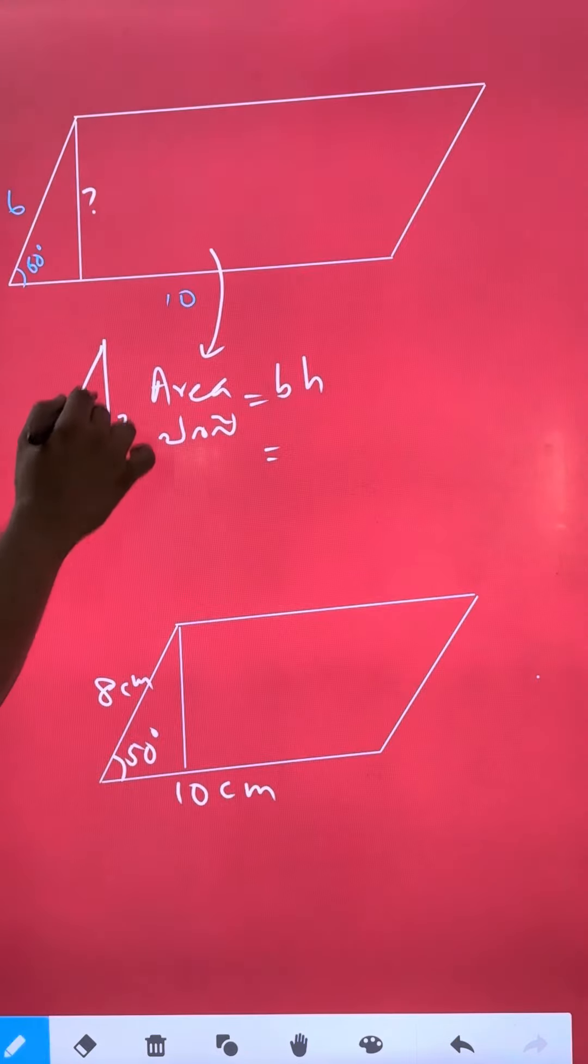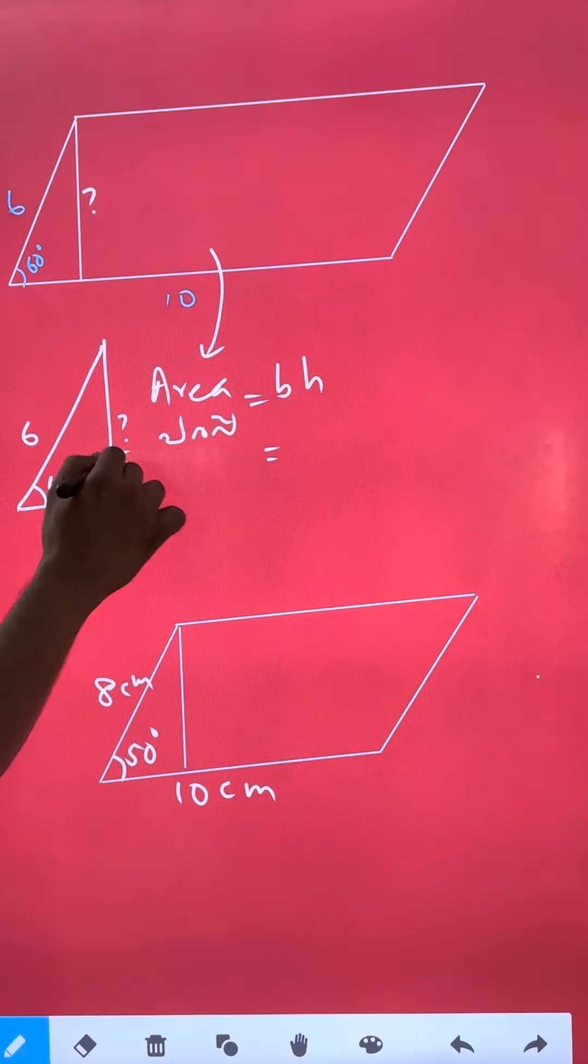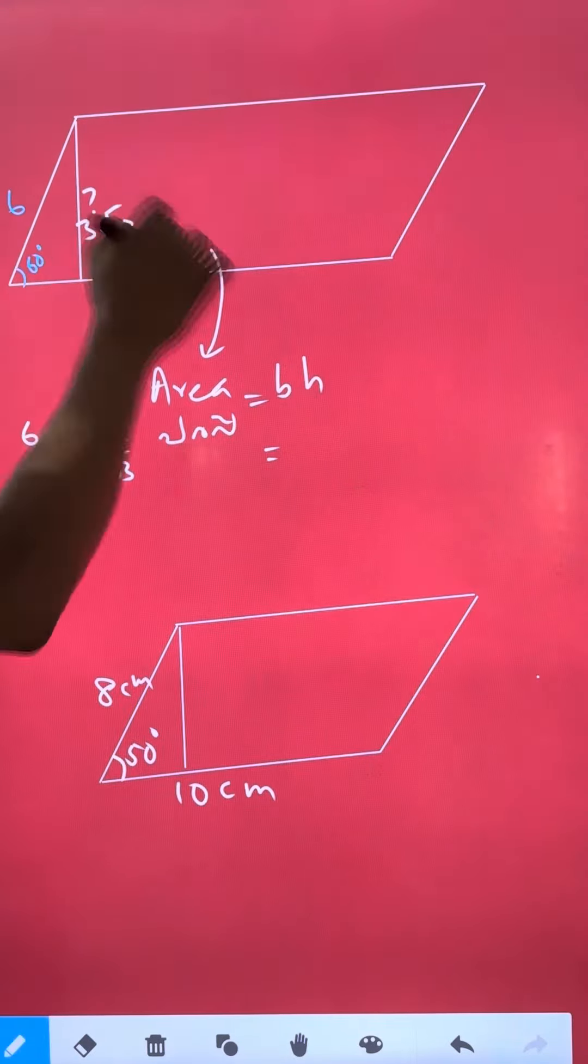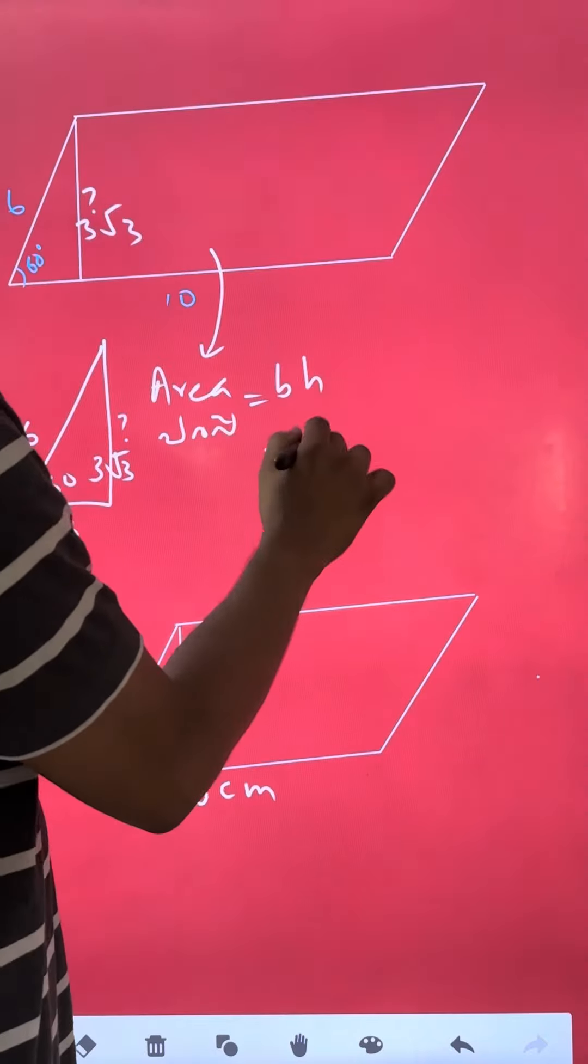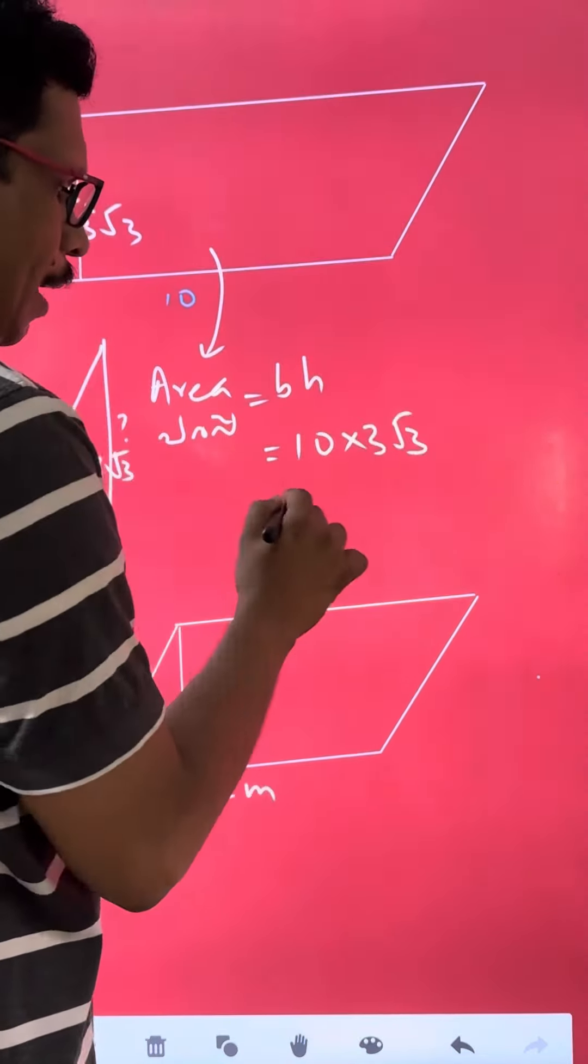This is the height. This is the 3 root of the height. This is B, this is B×H. 1 is 3√3. You see both are 3√3.